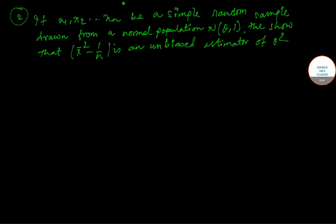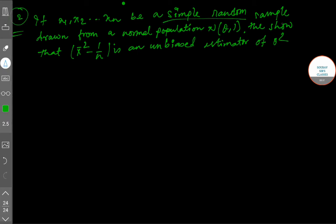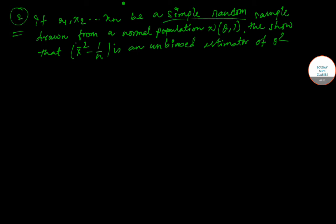The next sum I am going to solve is one of the very important proofs. If X1, X2, ..., Xn is a simple random sample drawn from a normal population with mean equal to theta and variance equal to 1, then show that X-bar squared minus 1/N is an unbiased estimator of theta squared.